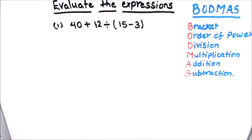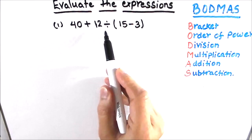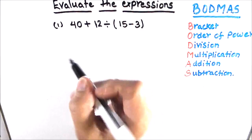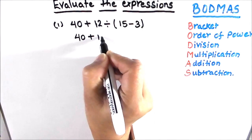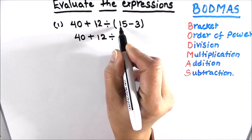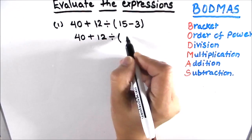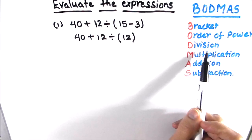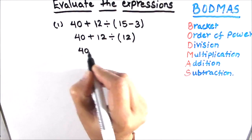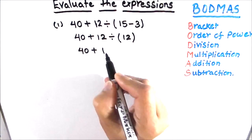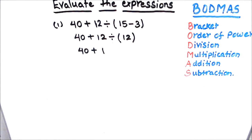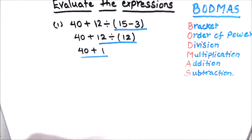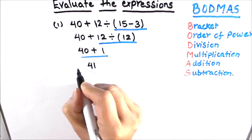Let's start with our first expression. In this expression we have addition, division, brackets, and subtraction. Before solving any operations we first start with the brackets. So we have 40 plus 12 divided by bracket 15 minus 3. We solve the bracket first: 15 minus 3 is 12. Now we have addition and division. According to BODMAS we divide first, so 12 divided by 12 equals 1. Then we have 40 plus 1, which equals 41. Our final answer is 41.